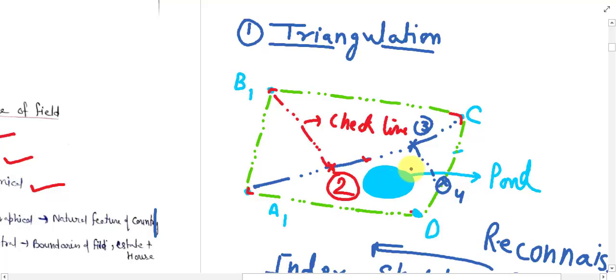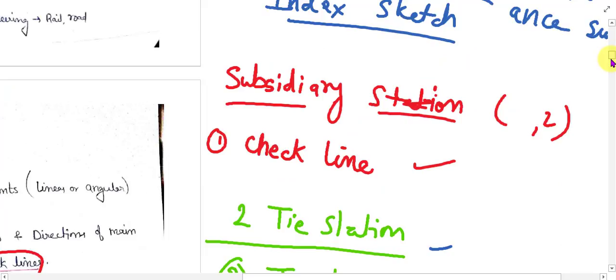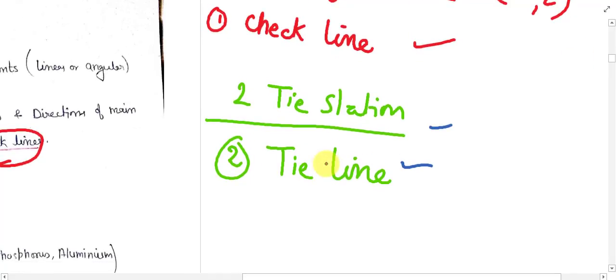So you are moving to another station, that is station number three which is located on main baseline, and station number four which is located on main survey line. So these stations are known as tie stations because these stations are not main stations. And the line drawn between these two stations is known as tie lines.